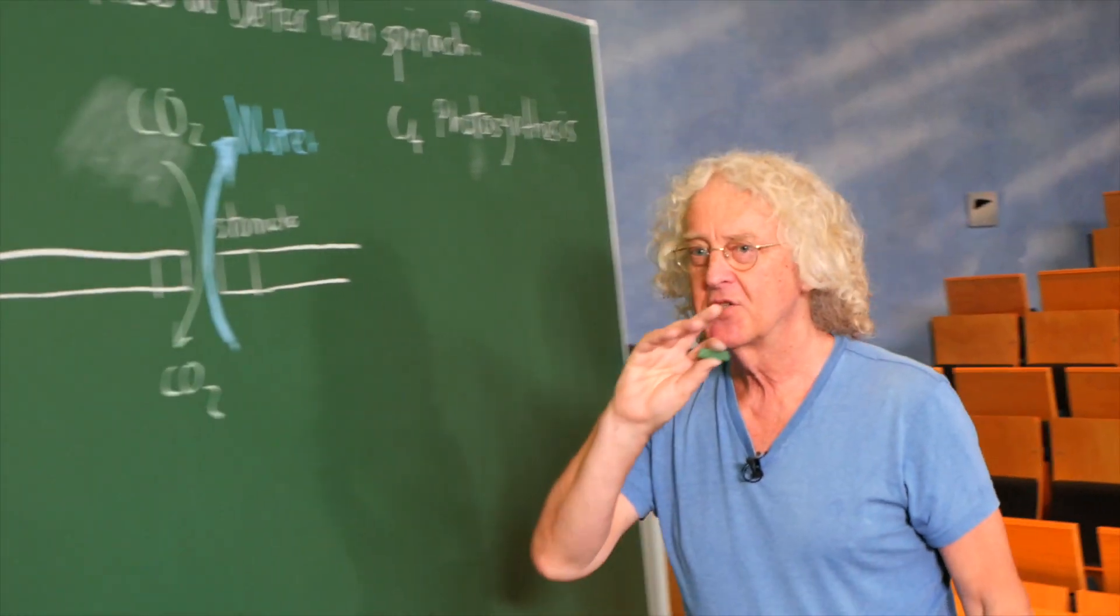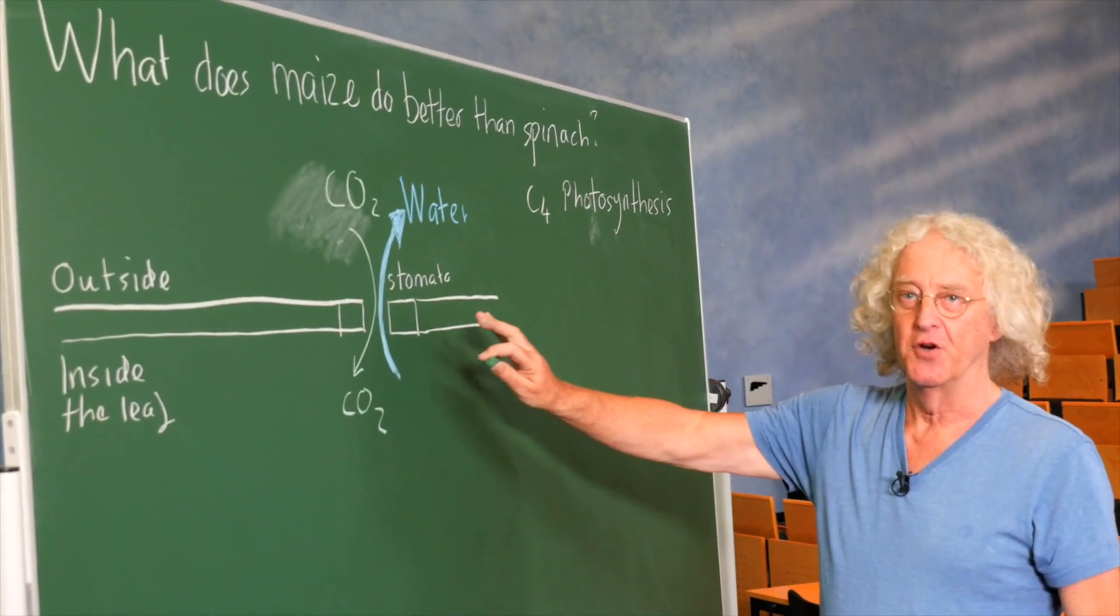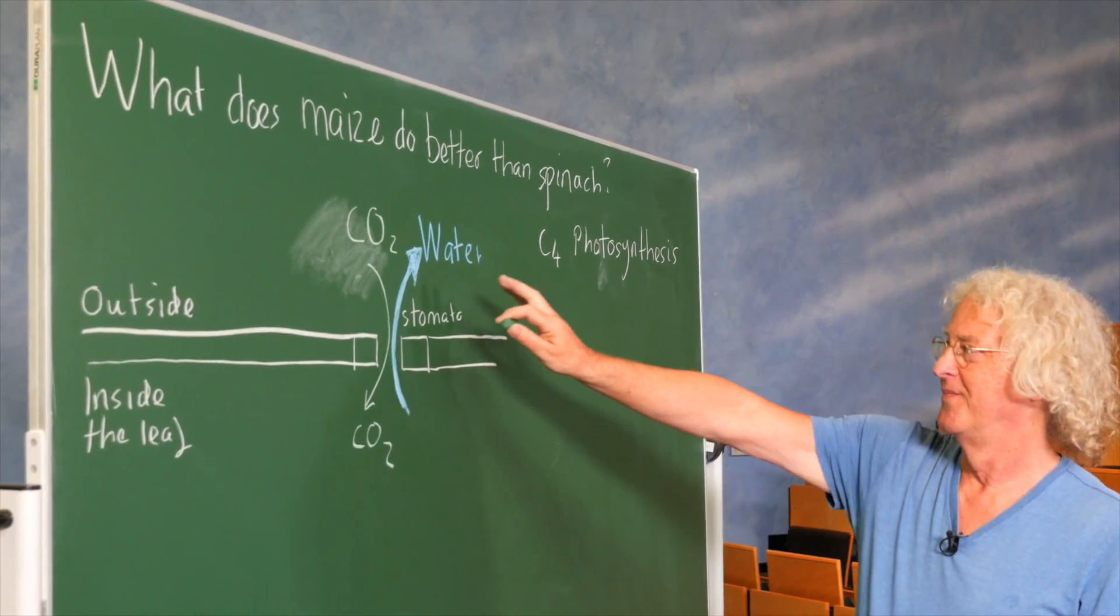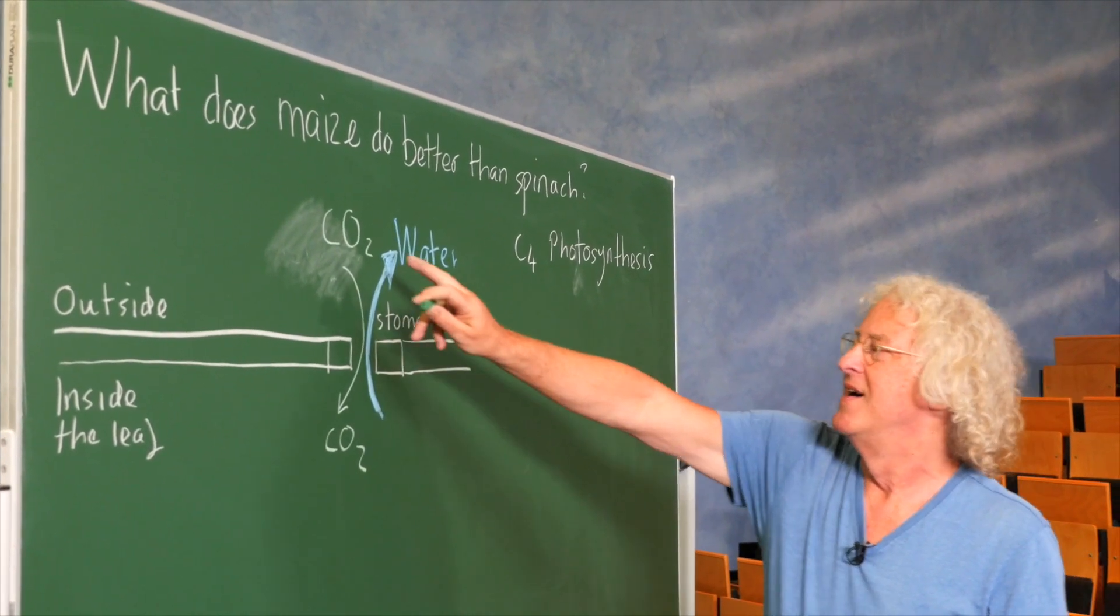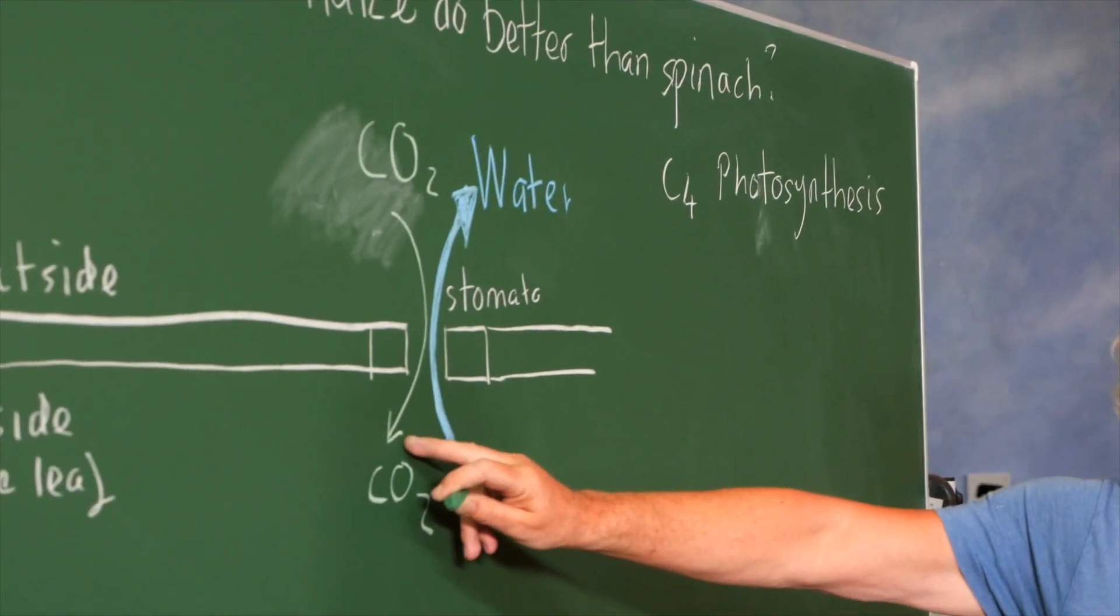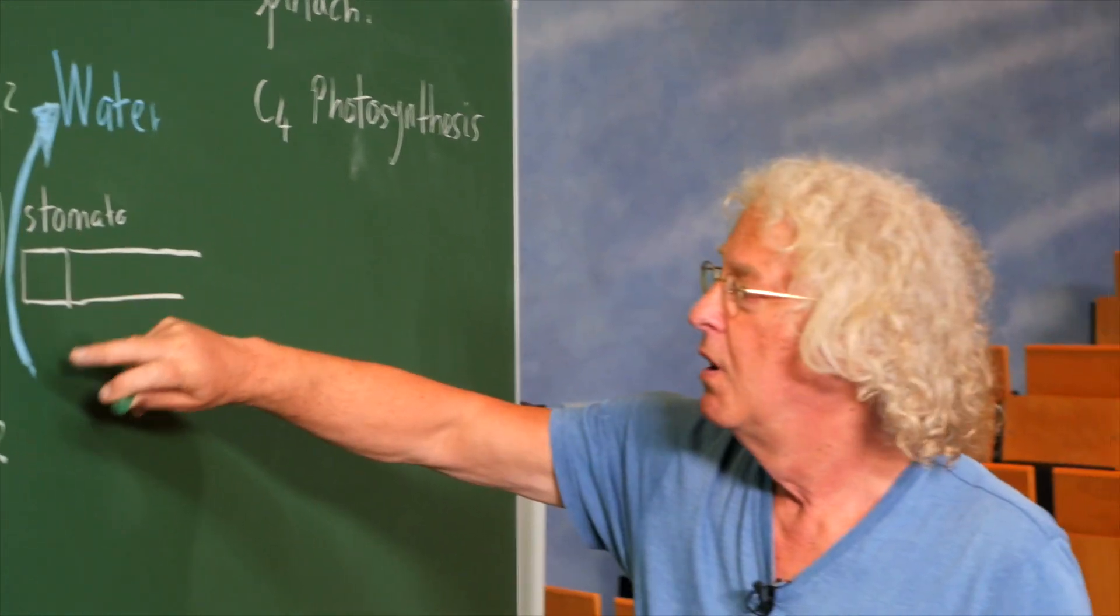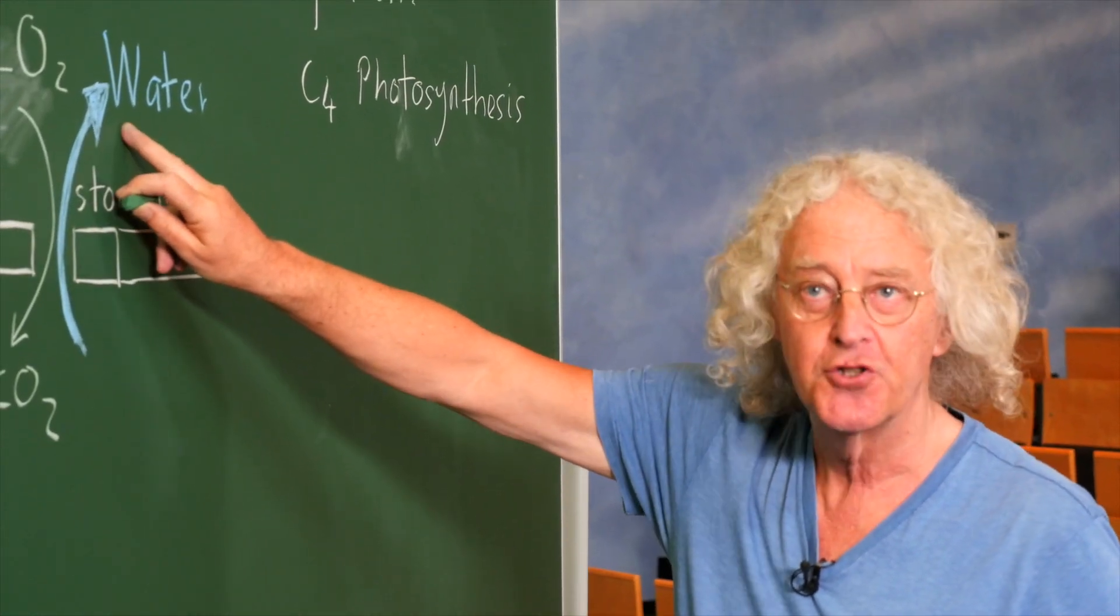It's explained in earlier videos, in one video, why do plants need water? They have this problem. When you take carbon dioxide up into a leaf, this occurs through little pores called stomata, and water is lost.